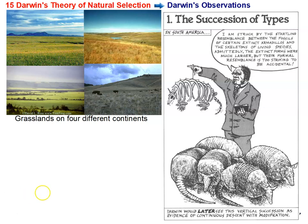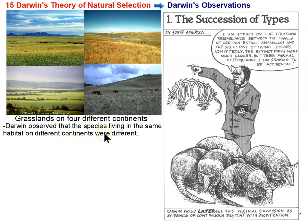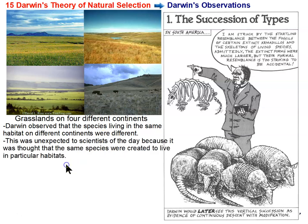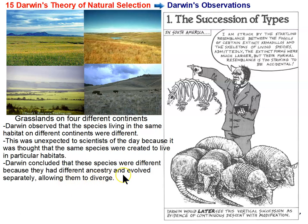A couple of the things he observed: first, grasslands on different continents. The Beagle went all over the world and stopped at different continents, and each continent has what we would consider a grassland habitat. He observed that the species on those different continents, even though they were in the same habitat, were different. This was unexpected, because people thought that species were created for their habitat — whether in Africa, South America, or Australia — it should have the same species. But that's not what Darwin observed. So he concluded that species were different because they had different ancestry and they evolved separately, allowing them to diverge.